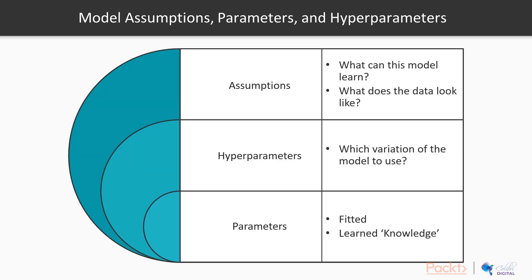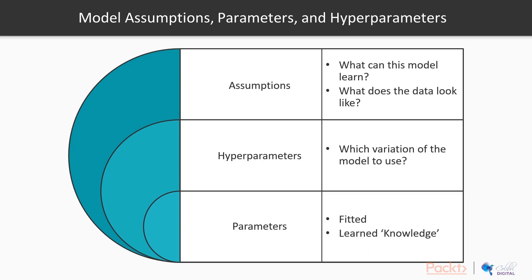Models, assumptions, parameters, and hyperparameters. In building predictive systems, there are three core concepts in terms of what model you pick. In the top layer, we have assumptions — as seen in the top box. The model assumption dictates two things: number one, what can this model learn, and number two, what does this data look like?